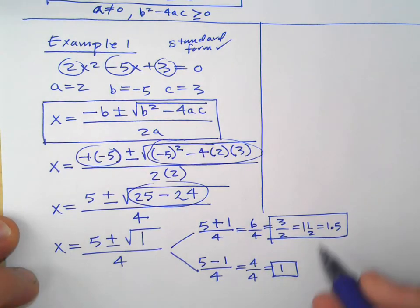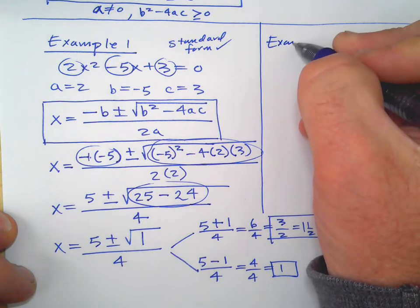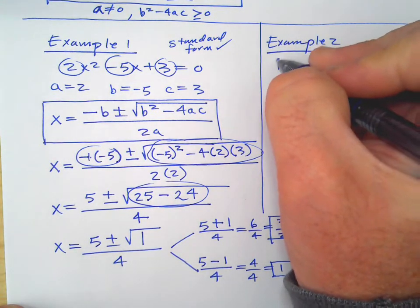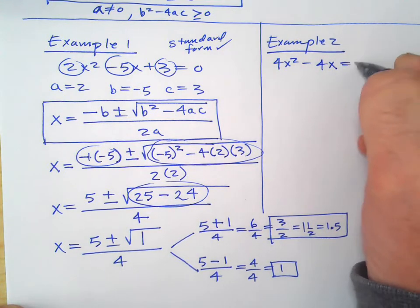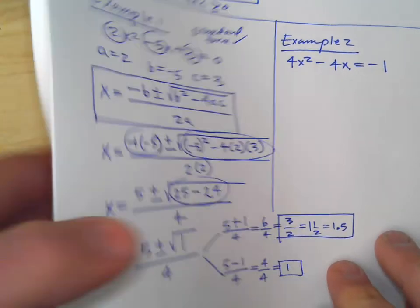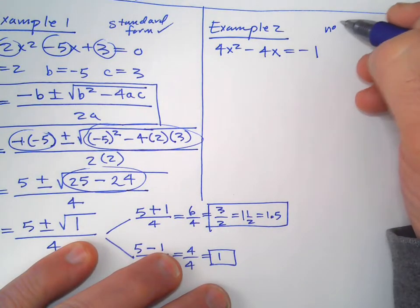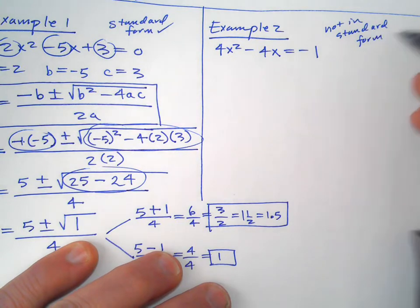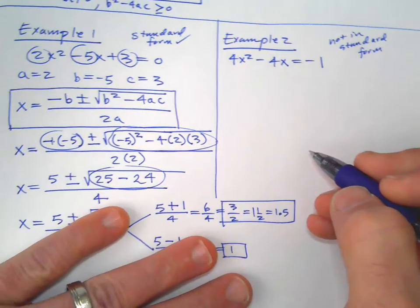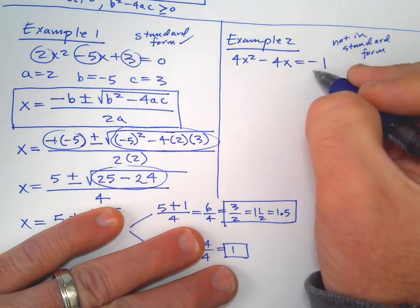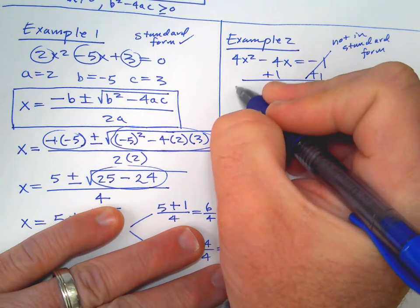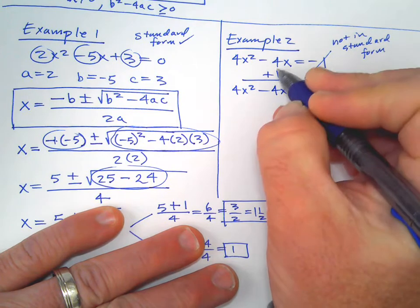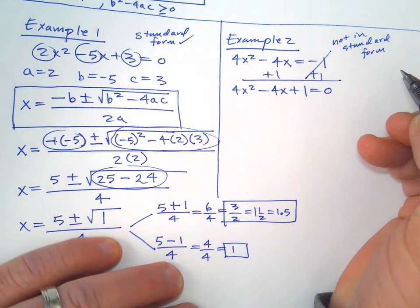Let's do another one and introduce a little extra challenge. Example 2: the quadratic equation is 4x squared minus 4x equals negative 1. The challenge here is that it is not in standard form. So we need to move everything to one side and make this equal to 0. When we rewrite it in order, we get 4x squared minus 4x plus 1 — cannot combine these, they're not like terms — equals 0. You need the equals and the 0. Now it's in standard form.